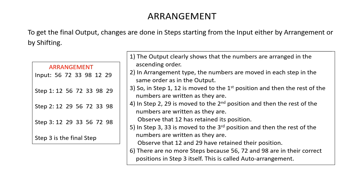Now let's look at what changes are being done from input to the output. When you look at input to step 1, you will see that 12 is moved to the first position; the rest of the numbers are written as they are. In step 2, 29 is moved to the second position and the rest of the numbers are written as they are. Observe that 12 has retained its original position.